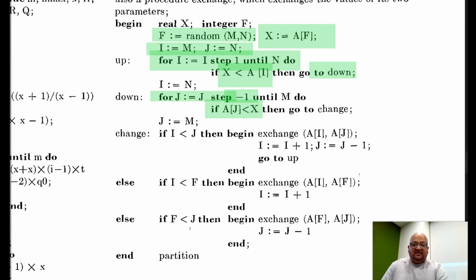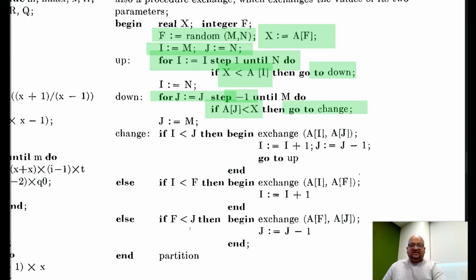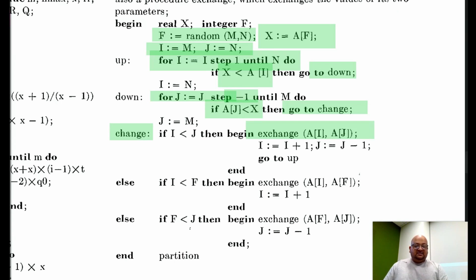Now at this point, i points to an element on the left side of the array that is greater than the random element we picked, and j has found an element on the right side of the array that is less than the random element. We then jump to the exchange part and swap these two elements that are out of place — the ones that i and j are pointing to. Note that this is an in-place exchange; we simply exchange the two elements within the array itself. Then i keeps moving upwards, j keeps moving downwards, and we start the process all over again by jumping back to the top.